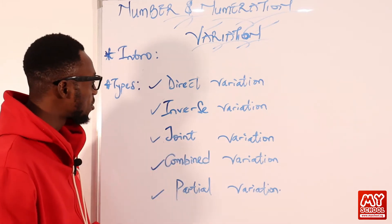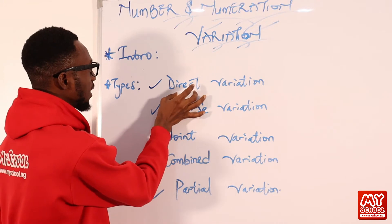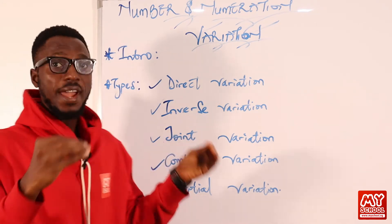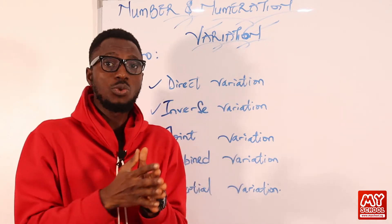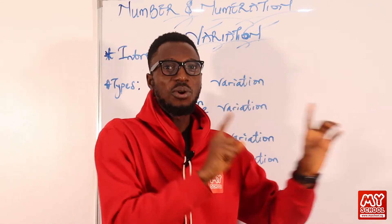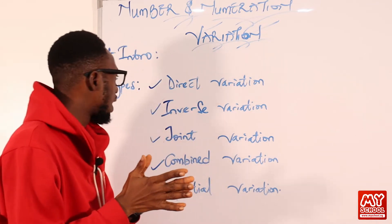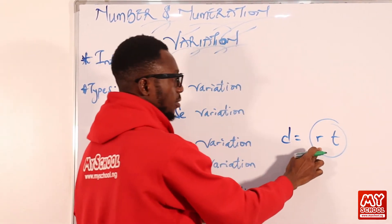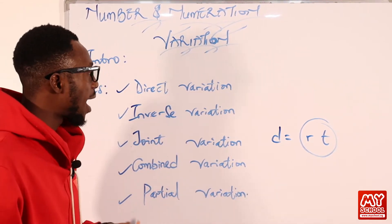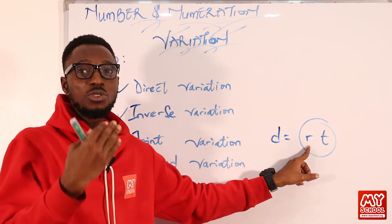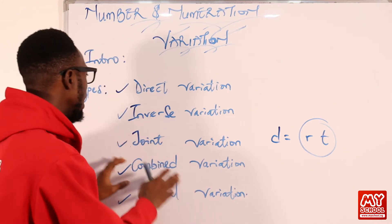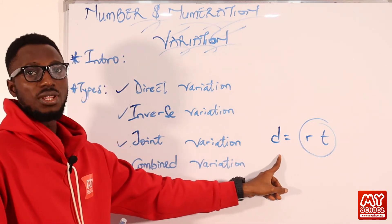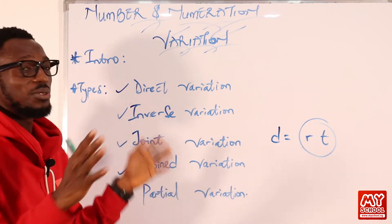Joint variation is like an expanded form of direct variation. In joint variation, you have a relationship where what happens to a particular quantity is not just dependent on one other quantity — at least two quantities are involved. For instance, distance traveled is affected by both rate and time. How far you've traveled depends on the rate at which you are traveling and the time spent traveling.